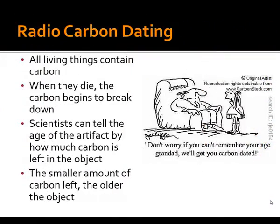Which brings us to radiocarbon dating — the process by which scientists can determine how old something is. When something dies and we have no records left behind, we use this scientific process which determines the age of something by discovering how many carbon atoms are left within it. All living things and non-living things contain carbon. The fewer carbon atoms that remain, the older the object is, because it's been breaking down and decomposing for a longer period of time. This can be done with artifacts left behind by humans as well as with human remains.